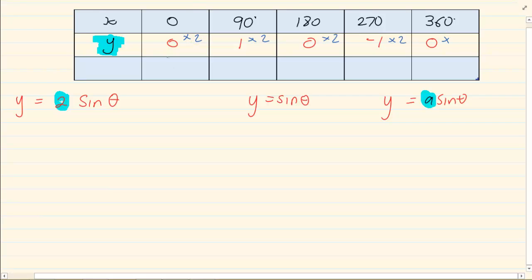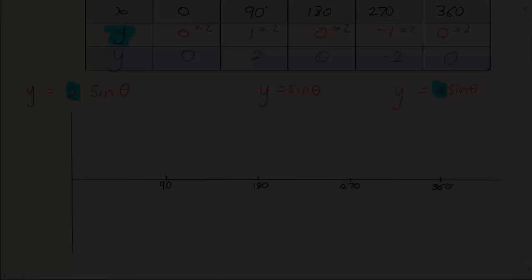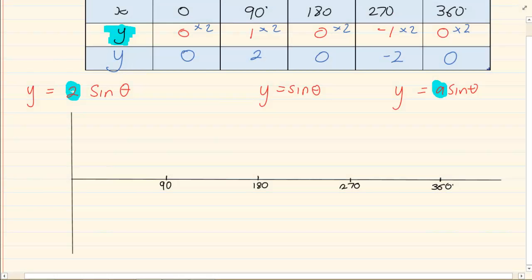So instead of 0, I have 0 times 2 which is 0. Then 1 times 2 which is 2. 0 times 2 which is 0. Minus 1 times 2 which is minus 2. 0 times 2 which is 0. So my new y values are now 0, 2, 0, minus 2 and 0. The x value is still the same, so when we draw the graph we have new coordinates.